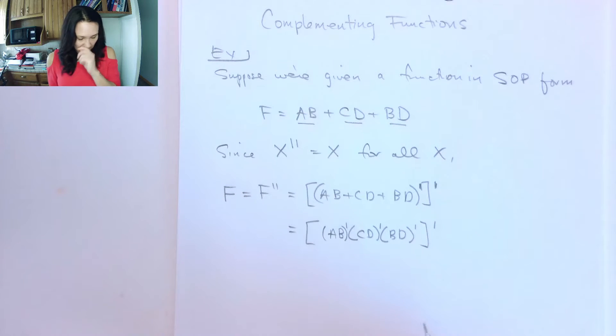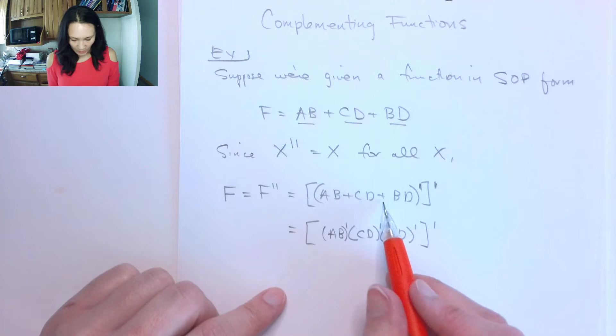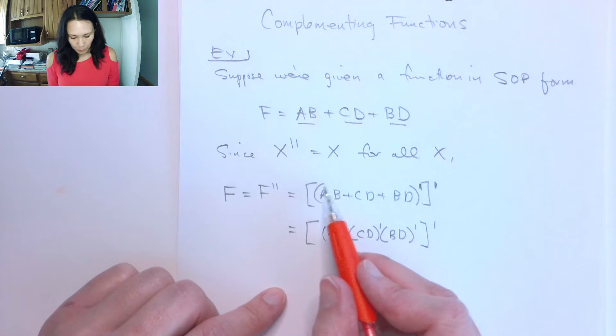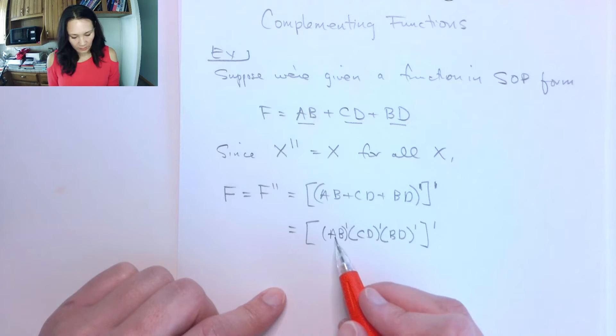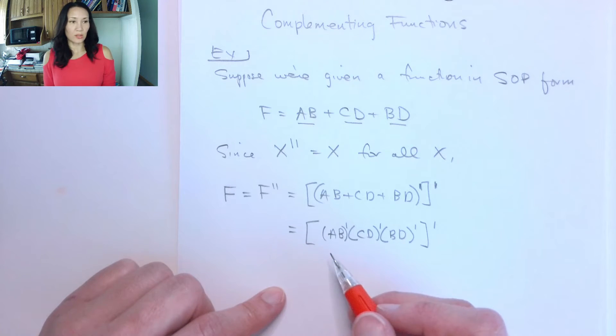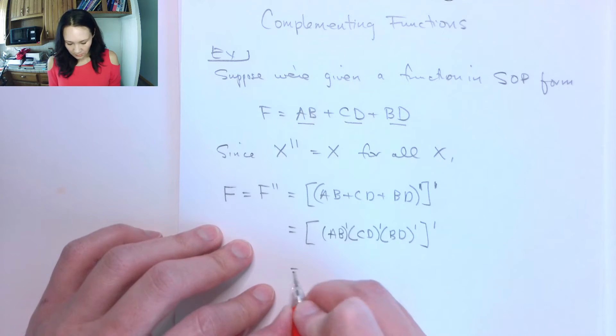So now you can see that we changed all of our OR's to ANDs, and then every one of these terms get their own complement. So be careful, it's not the individual literals, A and B, that get their own complement. Not yet. We need to apply De Morgan's again in order to do that. So let's do that next.